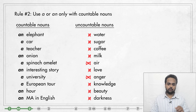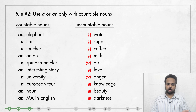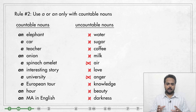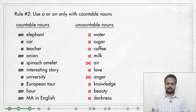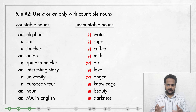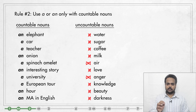Uncountable nouns cannot be counted in this way. Nouns like water, sugar, milk, love, anger, knowledge are some examples. You cannot say 'I drank four waters' or 'I want eight milks.' To a person, you can say 'I love you,' but you can't say 'I have five loves for you.' That doesn't make any sense. So these are all uncountable.